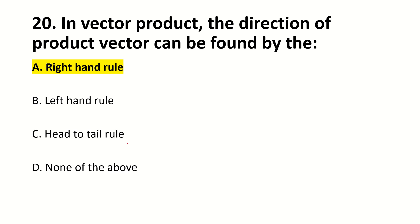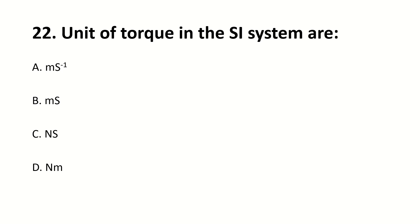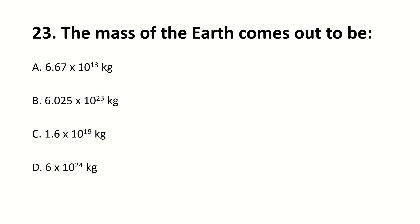The SI unit of force is known as dash. Right answer is Newton. Unit of torque in SI system is called dash. Right answer is N·m. The mass of Earth comes out to be dash. Right answer is 6 × 10²⁴ kg.